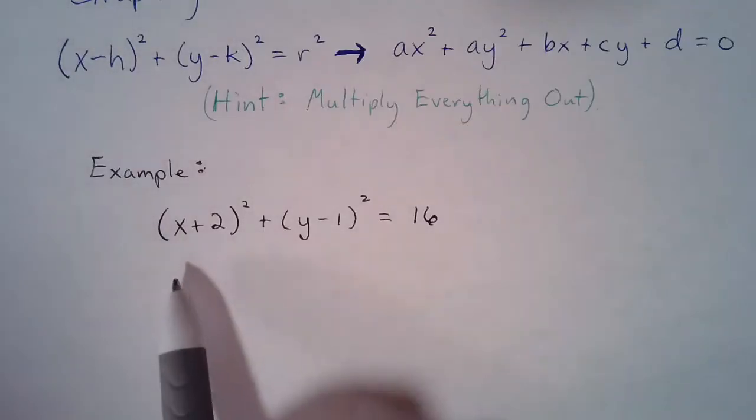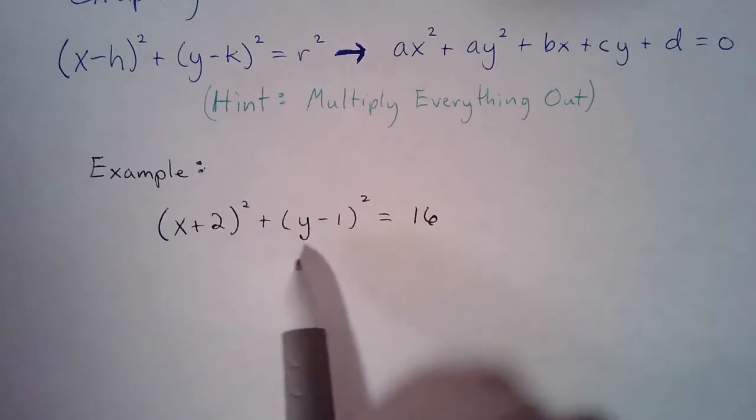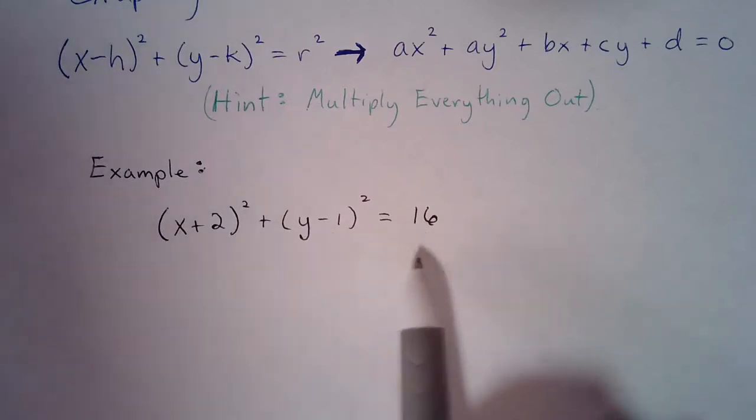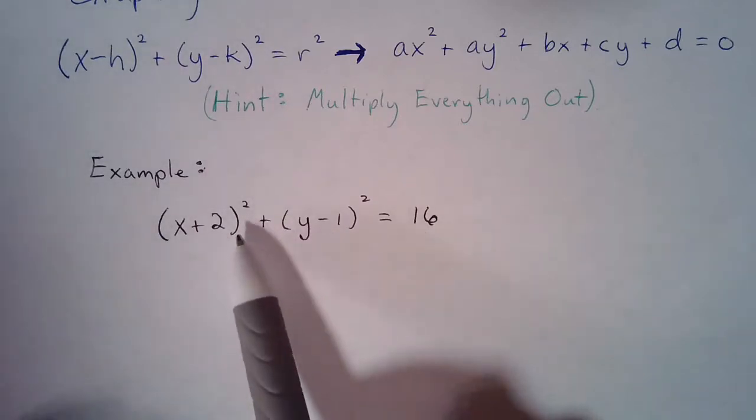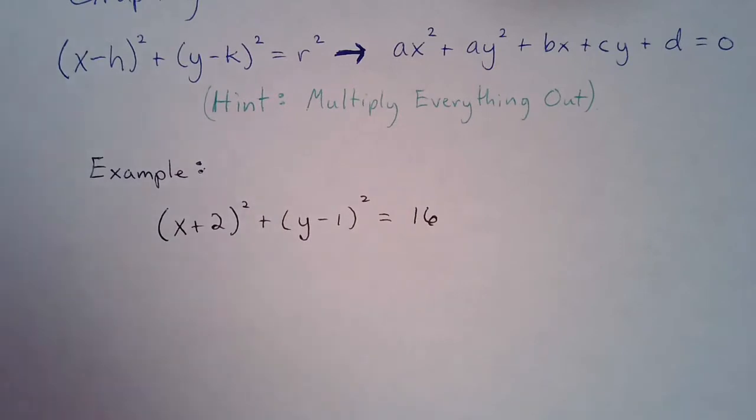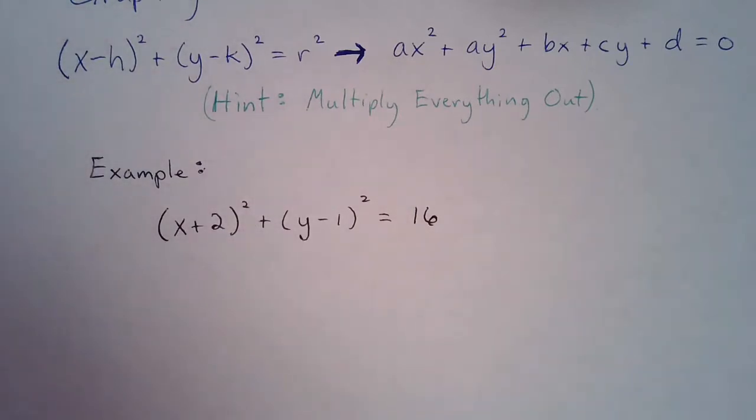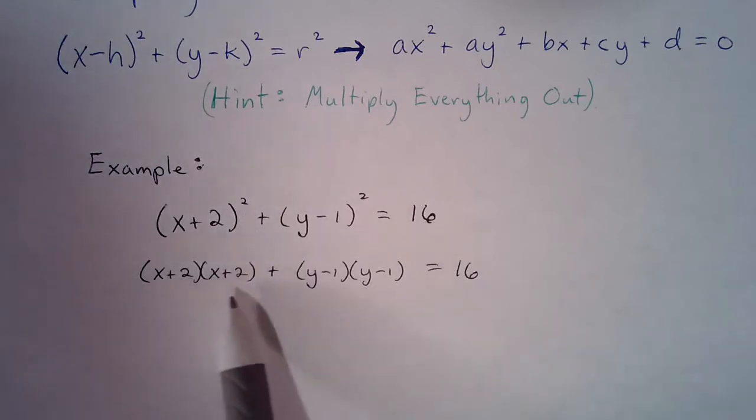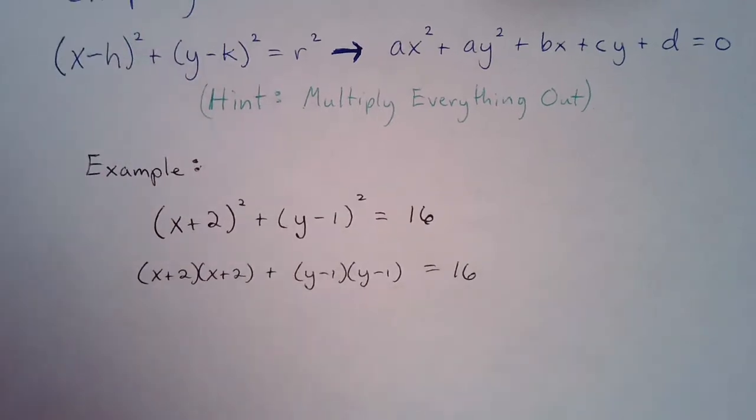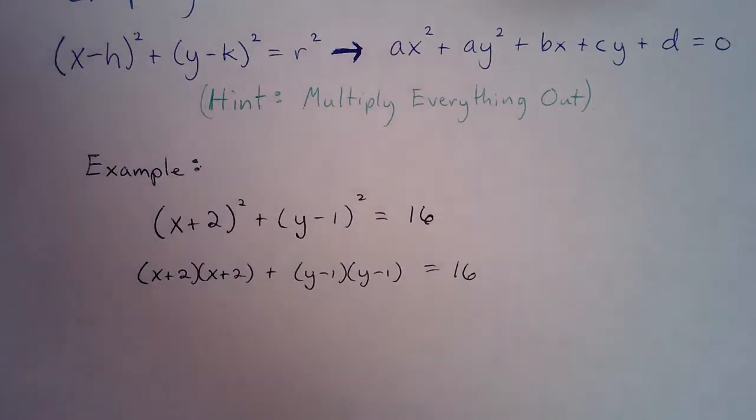Alright, so we're going to go through this example of (x+2)² + (y-1)² = 16. Now when something is squared, that just means that we have two of the same binomial multiplied. Alright, so instead of writing (x+2)², we can just say (x+2) times (x+2). And we can say (y-1) times (y-1). Alright, so now we can use an area model or the distributive property twice to multiply these out. I'm going to use both methods so that you can see each one.